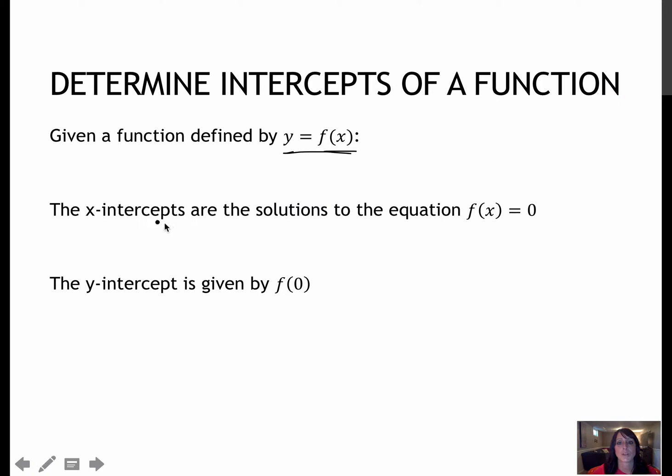To find the x-intercepts, we need to find all the solutions to the equation f of x equals 0. So that's just fancy math talk for y is going to be 0, same as we had before. And then the y-intercept is given by f of 0. That means x is going to be 0. So we're going to have y equals 0, and we're going to have x equals 0, and we're going to find whatever those intercepts are.